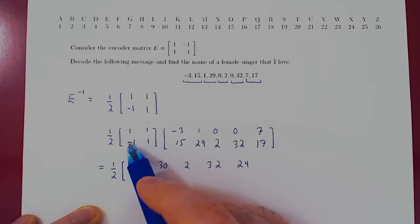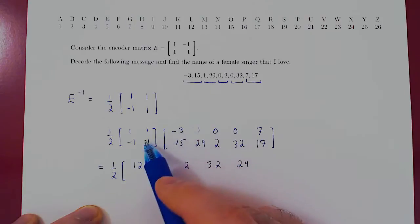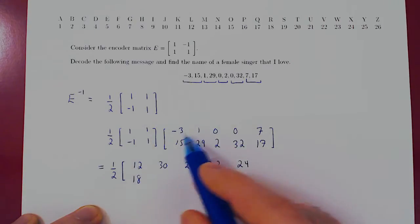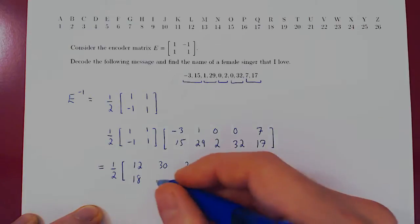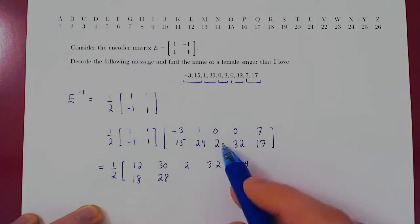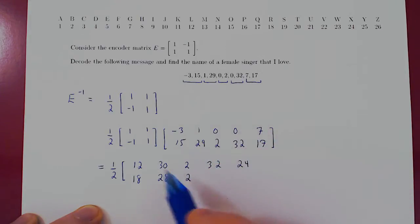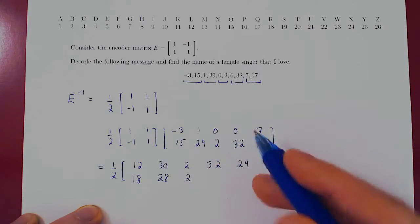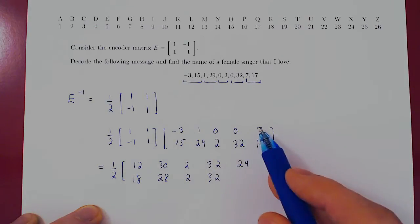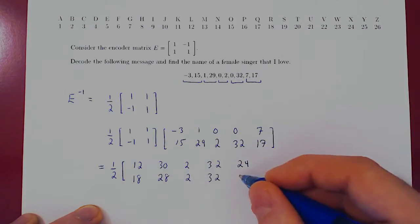Let's construct row 2 now. 3 plus 15, 18. Negative 1 plus 29, 28. 0 plus 2, 2. 0 plus 32, 32. Negative 7 plus 17, positive 10.